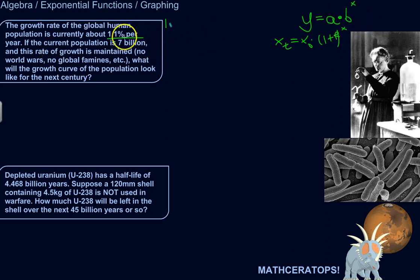This x thing would represent the number of years. So if the current population is 7 billion, so what you start off with is 7 billion, and this growth rate is maintained - it's generally 1.1% per year, meaning there's no gigantic world wars or global famines or something that would drastically affect that growth rate - what will the growth curve of the population look like for the next century?